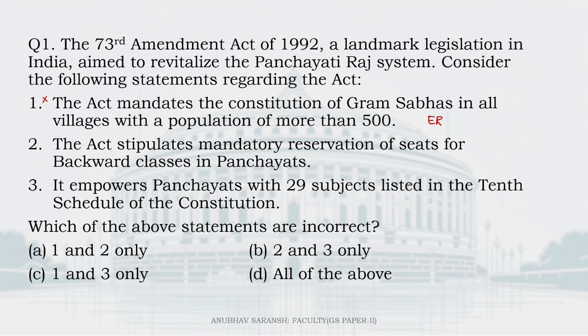The average population of a Gram Sabha is around 3,400 people. And Gram Sabha means what? A Gram Sabha is not just people of one village — it can be more than one village also. So, statement one is wrong.